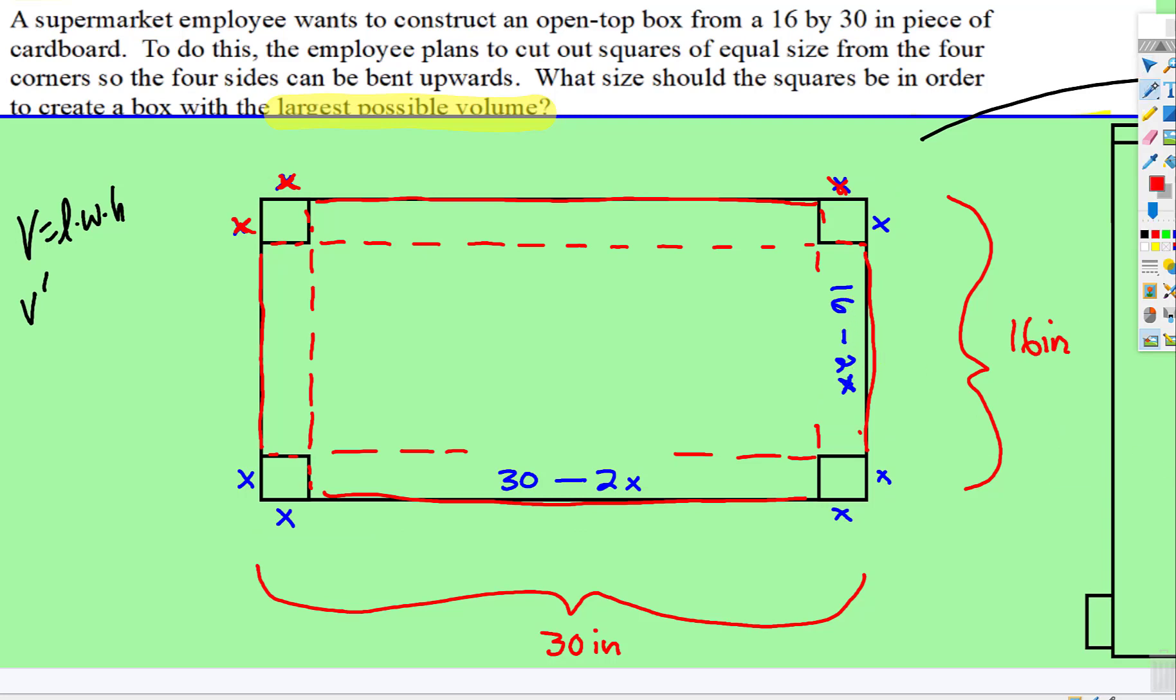So look at the dimensions you now have. You have the length, which is 30 subtract 2x, times the width, which is 16 subtract 2x, times the height. Well, the height, when you fold this up, that height right there is x.